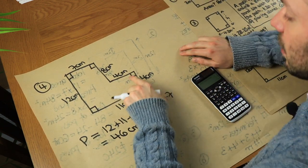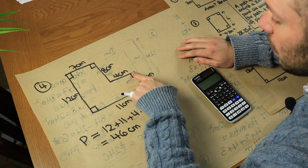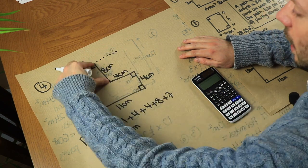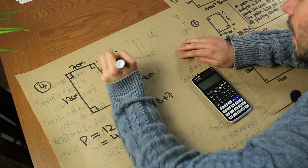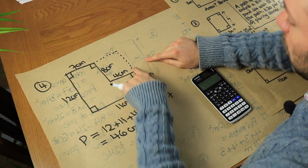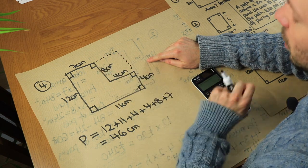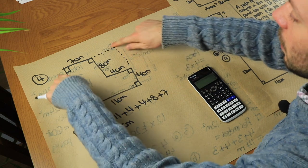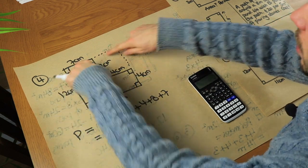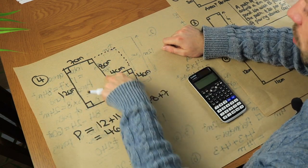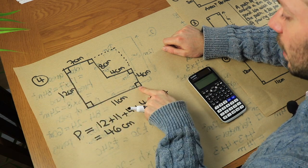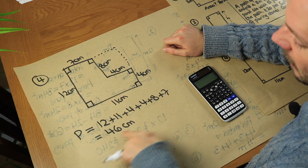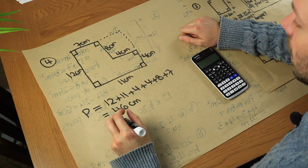A little trick: that missing length on one side is the same as the dotted length on the opposite side, and the same applies to the other pair of edges. So we can discard those two edges and replace them with the two dotted edges, effectively getting a rectangle. We can then find the perimeter of that rectangle: 12 plus 11 is 23, doubled gives 46 — the same answer. That's a nice trick for L-shapes.